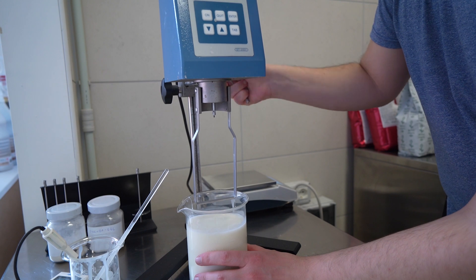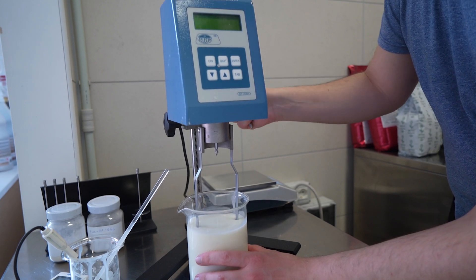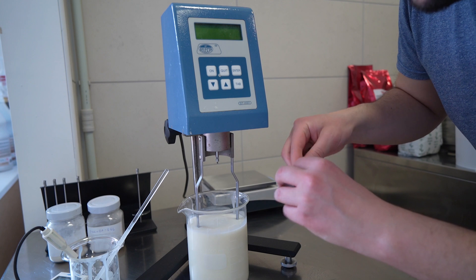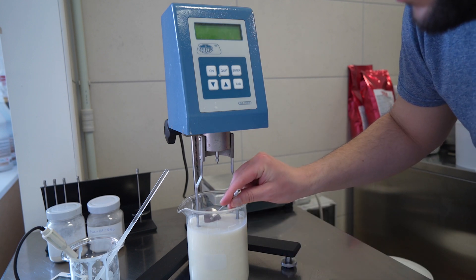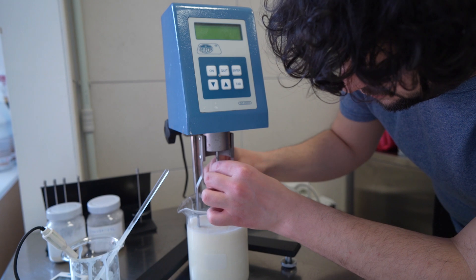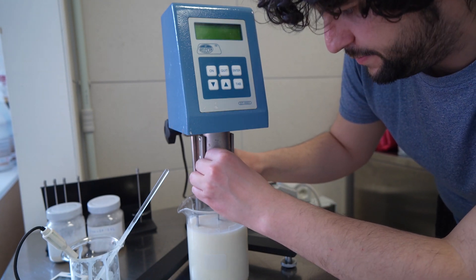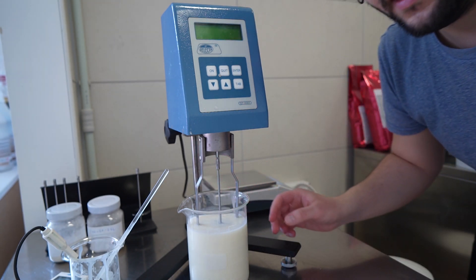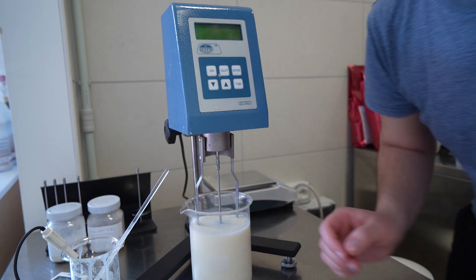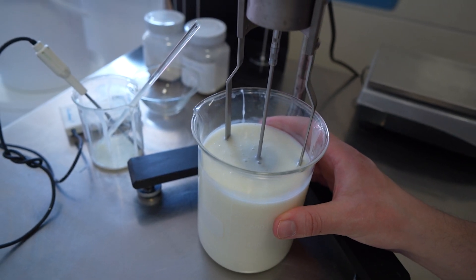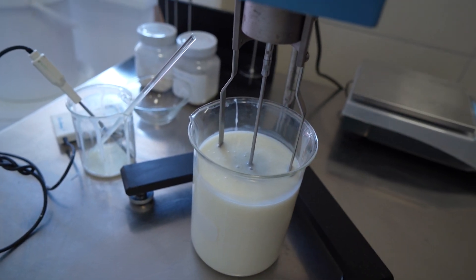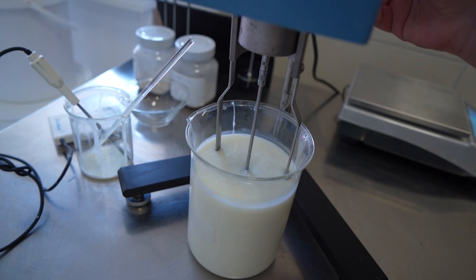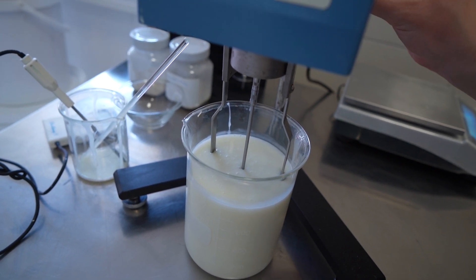Now I can place my mix under the viscosimeter, slowly going down with the spindle, then fix it. We have to make sure the spindle is exactly in the center because we want a stationary motion and reach the right level. Now we're ready to start measuring our viscosity.